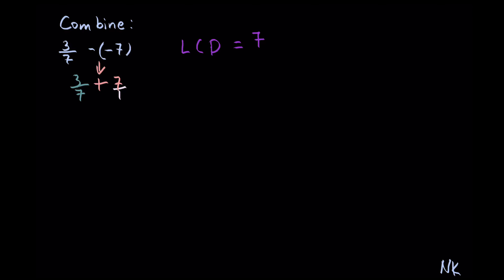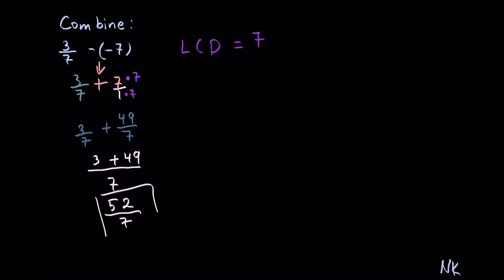So now we have to multiply this 1 by 7 to get LCD. Whatever we do to the denominator, we do the same thing to the numerator. So now we have 3 out of 7 in the first fraction. Plus the second fraction will have a 7 in the denominator because 1 times 7 is 7, and 49 in the numerator because 7 times 7 is 49. Now we can bring everything under LCD. So LCD is 7. We copy numerators: we had 3 in the first fraction, positive 49 in the second fraction. 3 plus 49 gives us 52, and it's out of 7. And this is our solution.